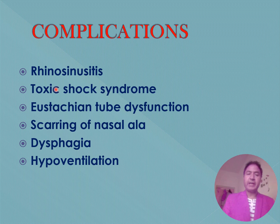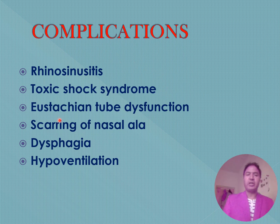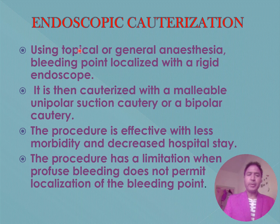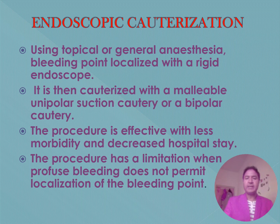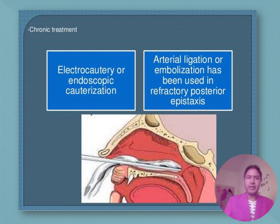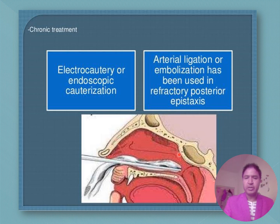Complications of posterior nasal packing include rhinosinusitis, toxic shock syndrome, Eustachian tube dysfunction, scarring of the nasal ala, dysphagia, and hypoventilation — with dysphagia and hypoventilation being additional complications compared to anterior packing. Endoscopic cauterization may be performed under topical or general anesthesia; the bleeding point is localized with a rigid endoscope and cauterized with malleable unipolar suction cautery or bipolar cautery. This is effective with less morbidity and shorter hospital stay. For chronic or refractory posterior epistaxis, arterial ligation or embolization may be used.